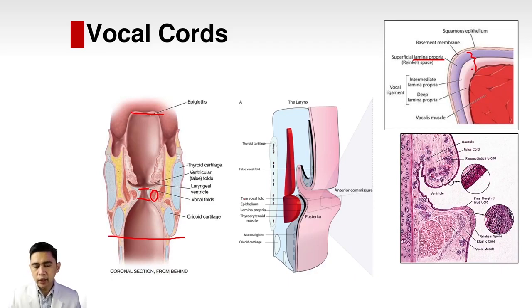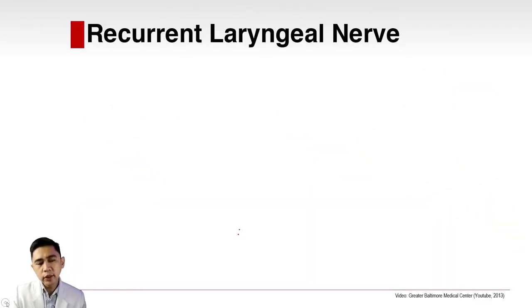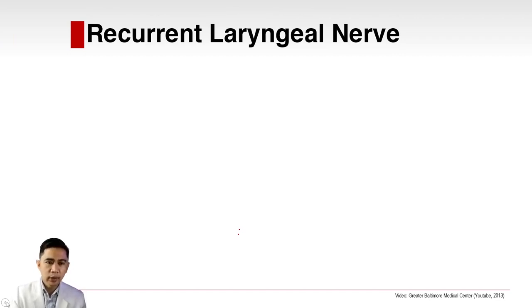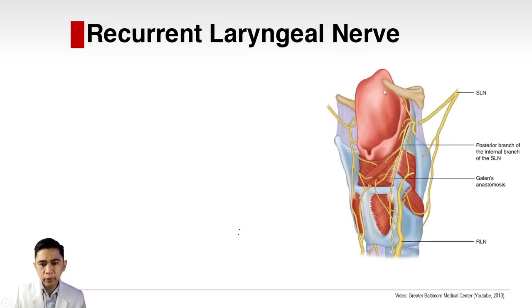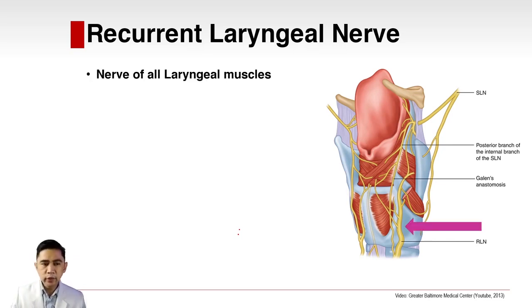The laryngeal complex has a true vocal fold and a false vocal fold. The difference is that you can find muscles — the vocalis and thyroarytenoid — in the true vocal fold but not the false vocal fold. The lamina propria is important: it has superficial, intermediate, and deep layers, acts like a gel attached to the muscle, and sits between the squamous epithelium and the vocalis muscle.